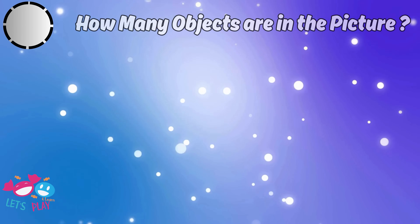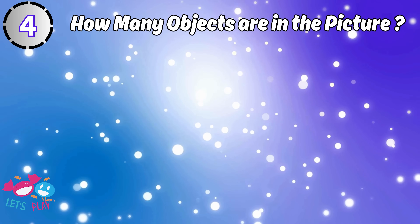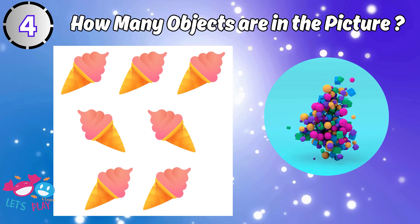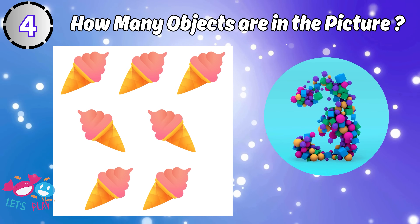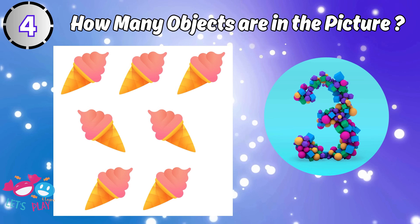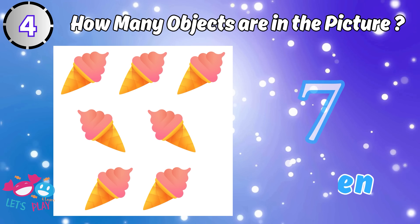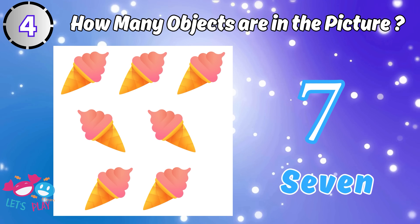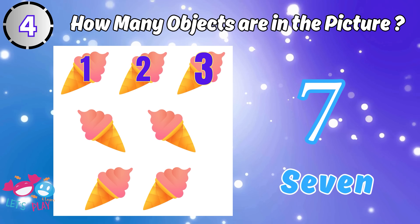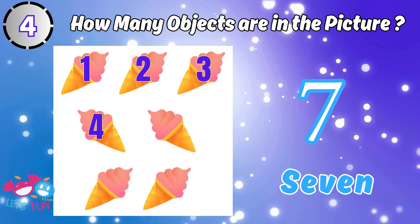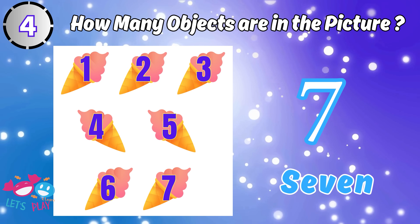How many objects are in the picture? Seven. One, two, three, four, five, six, seven.